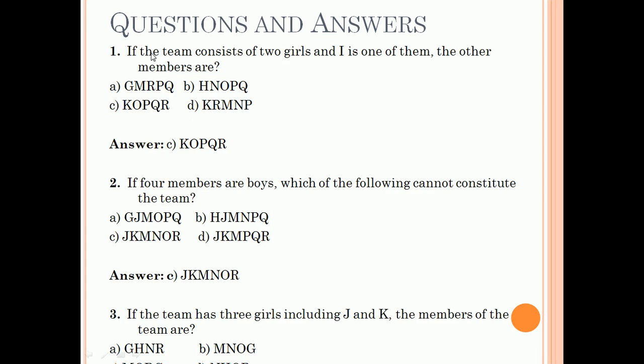Now the first question says: If the team consists of two girls and I is one of them, the other members are? This means there are two female members and four male members in the team, and I is one of the female members. Now since I is there, this means J cannot be there. No J means no M as well.